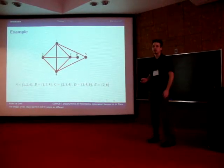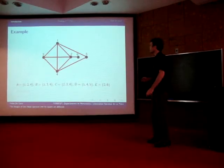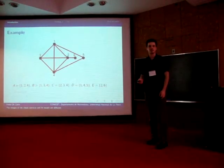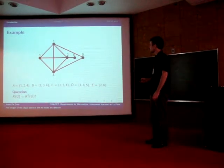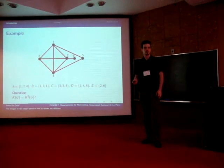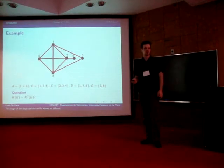But we don't have a similar characterization for any other class of iterated clique graphs and we have even these questions. Is K of G equal to K squared of G? That is the main question of this presentation.